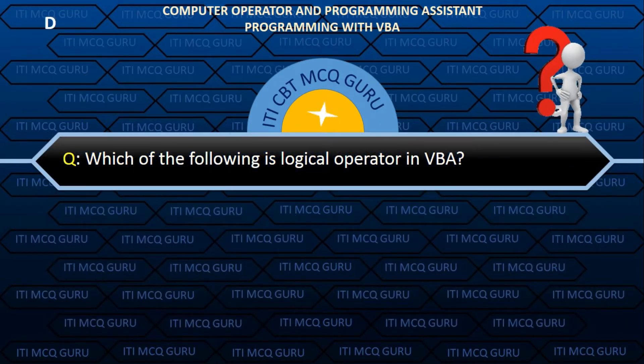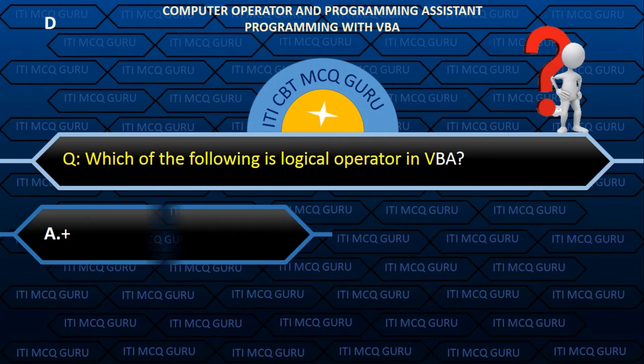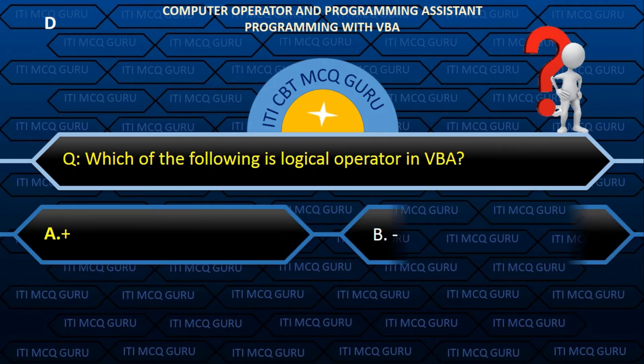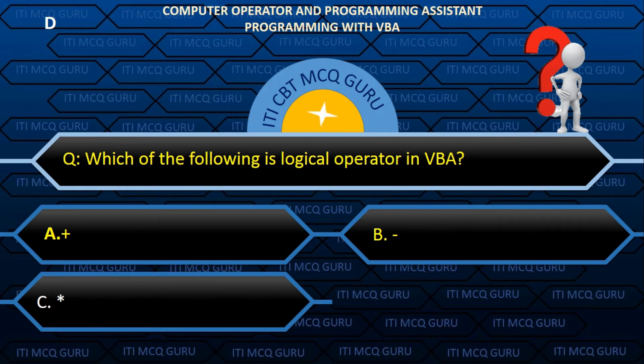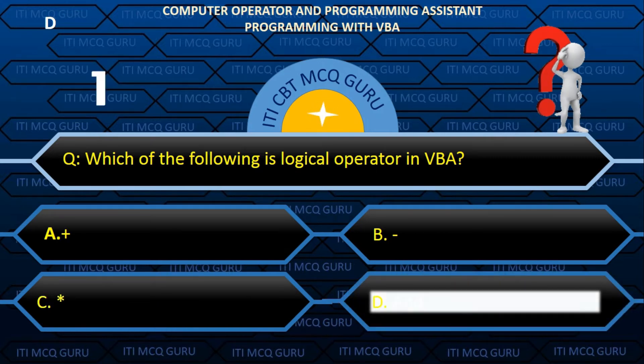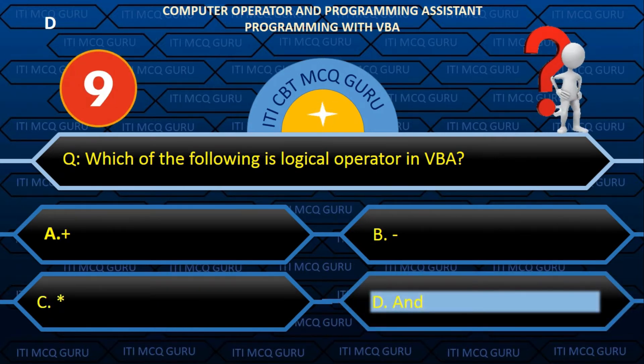Which of the following is a logical operator in VBA? Answer: D. AND.